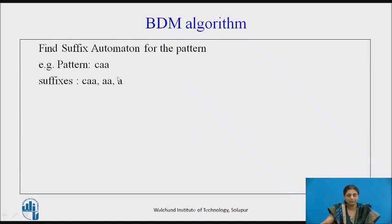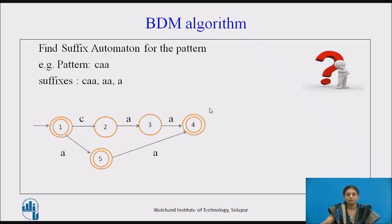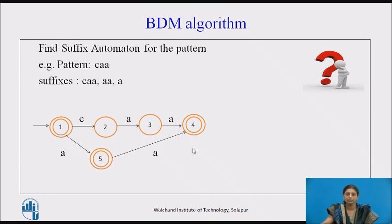Now consider the other pattern CAA, which has three characters and three suffixes: CAA, AA, and A. Pause the video and try to find the suffix automata that accepts all suffixes of this pattern — either by drawing it directly or by converting from a non-deterministic automata. The answer: path 1-2-3-4 accepts 'CAA', path 1-5-4 accepts 'AA', and path 1-5 accepts 'A'.